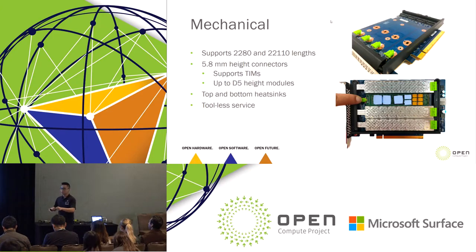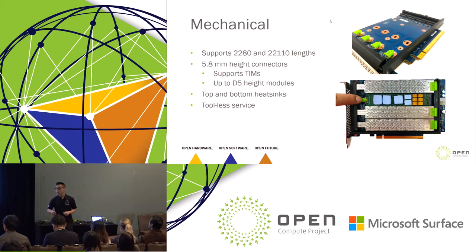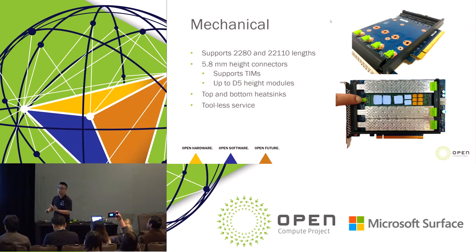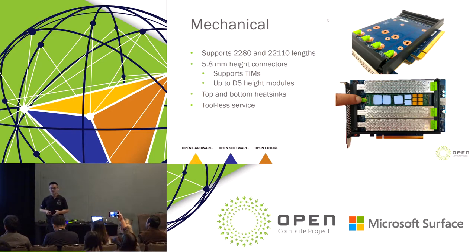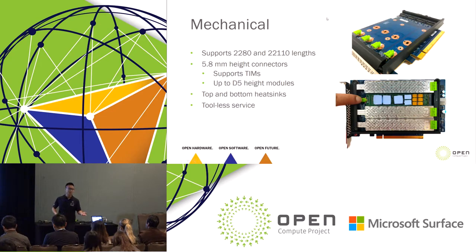In terms of connectors, we use a 5.8mm high connector. The reason is we want to support the D5 height module — the maximum thickness the M.2 specification provides. The M.2 spec specifies up to 4.2mm height, but we bumped it up to 5.8mm because we wanted to support thermal interface materials. We have top and bottom heat sinks — one top heat sink per M.2 — and true to Facebook design standards, tool-less service with all touchpoints outlined in green, so you can see how to replace an M.2.